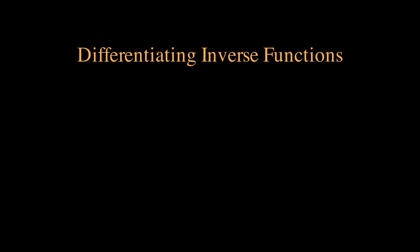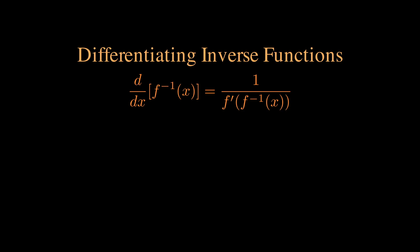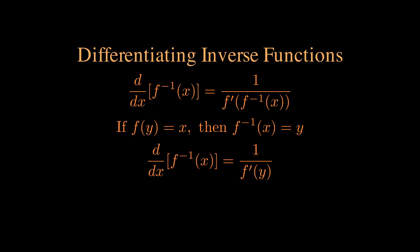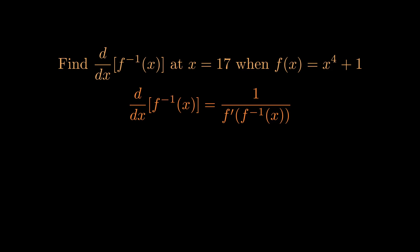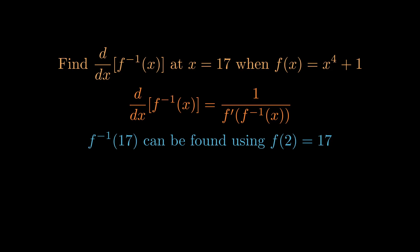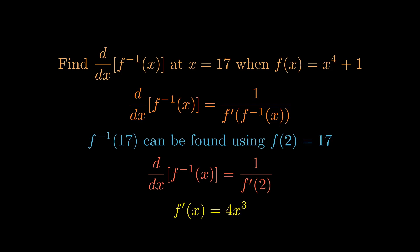How do you differentiate inverse functions? The derivative of the inverse function is 1 over f prime of the inverse of the value at which you want to find the derivative. Since f of y equals x means the inverse of x is y, the derivative of the inverse function is 1 over f prime of y. For example, given f(x)=x⁴+1, find the derivative of the inverse at x=17. Since f(2)=17, the inverse of 17 is 2. So the answer is 1 over f prime of 2, and since f prime(x)=4x³, we get 1 over 32.